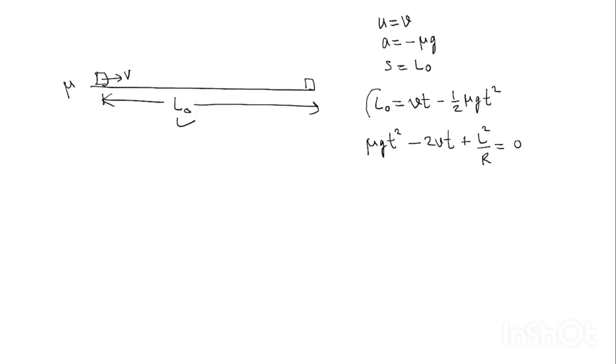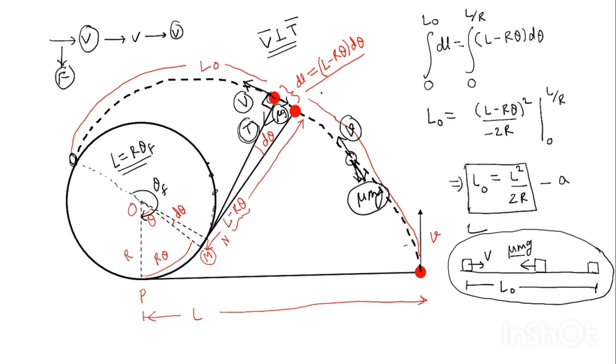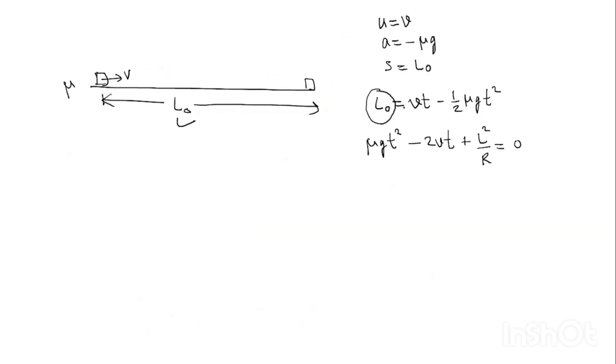Here, what we have placed? In place of L₀, we have simply used this value. L₀ is L² upon 2R. So, putting this, we easily get L² upon R in place of L₀. You see here, L² upon 2R you put, and you simply get this equation. Now, if you solve this equation, you get two values of time, T₁, T₂.